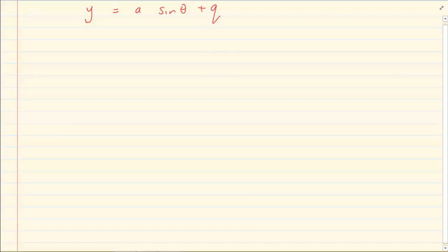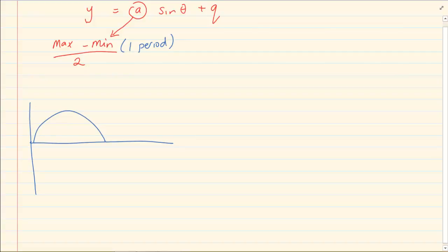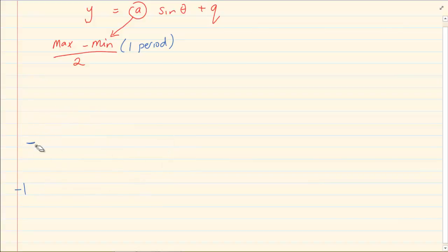We have y is equal to a sin theta plus q. The way we get 'a' is we take the maximum minus the minimum divided by 2. But when talking of maximum minus minimum, it must be within one period. Sometimes they intentionally only give you half a graph. The maximum might look like 1 and the minimum like 0, but you have to take the maximum and minimum of one complete cycle, which means the minimum is actually minus 1. Make sure that 'a' is maximum minus minimum divided by 2, within one period range.